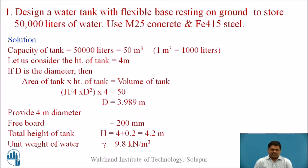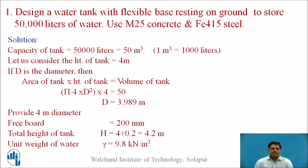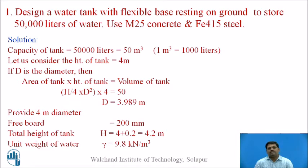Now let us see the problem. A problem is given for the design, and based on that, dimensioning shall be made, and the design and detailing shall be done. Design a water tank with flexible base resting on ground to store 50,000 litres of water. Use M25 grade of concrete and Fe415 steel. This tank is resting on ground, so a flat bearing area is available, and the capacity is 50,000 litres.